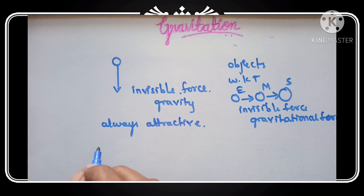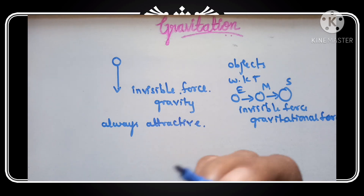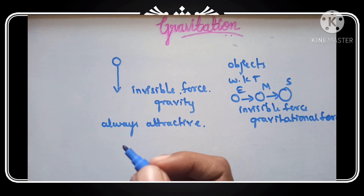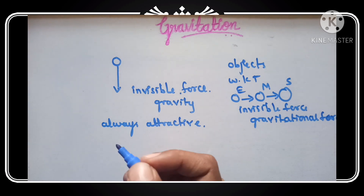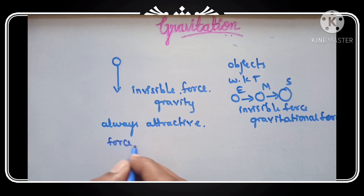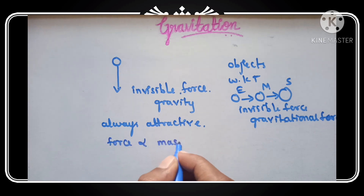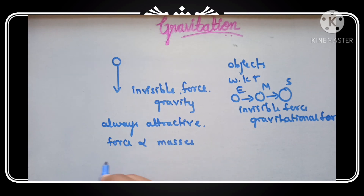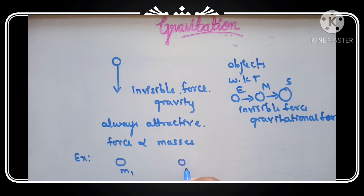Because if a body is attracted towards another body, one particle in the universe is attracted towards the other particle. So due to this gravitational force, it is always attractive. So let us consider that the force is directly proportional to the product of the masses. The force is always proportional to the masses. For example, consider one particle of mass M1 and another particle of mass M2.